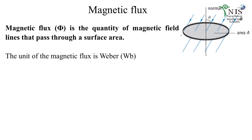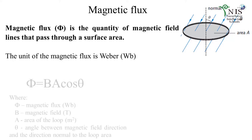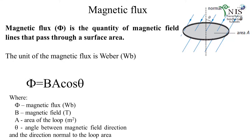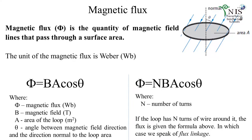Faraday found that the common thread behind all these observations is the concept of magnetic flux. Magnetic flux is the quantity of magnetic field lines that passes through a surface. The unit of magnetic flux is the Weber. The formula for magnetic flux shows that it equals the magnetic field multiplied by the area of the loop and the cosine of the angle between the magnetic field direction and the direction normal to the loop area. If we have more than one loop, we use flux linkage, where N is the number of turns.